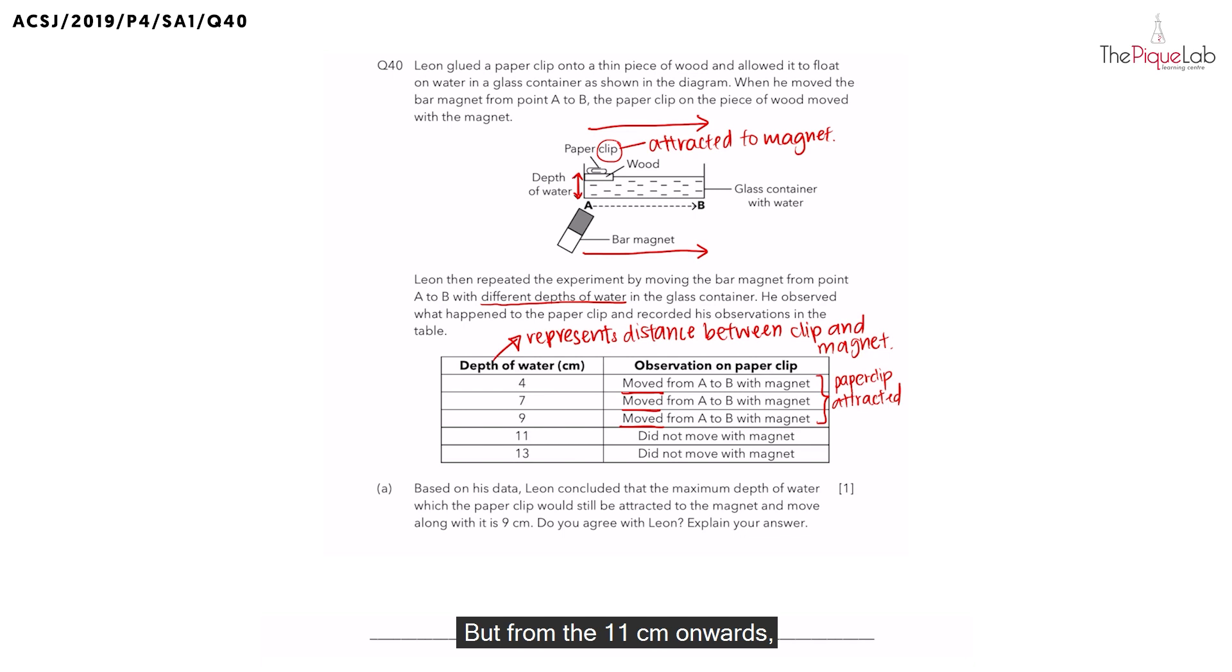Okay, but from 11 cm onwards, the paperclip no longer moves with the bar magnet. And then for 13 cm, same thing as well. So is the paperclip still attracted to the magnet? No, the paperclip is not attracted.